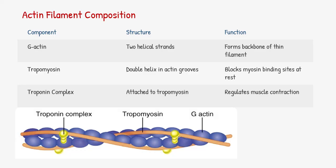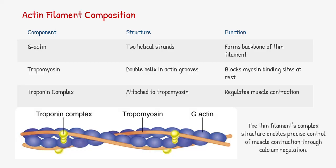Actin isn't alone — it's part of a sophisticated team. The G-actin subunits twist to form the filament's backbone. Lying in the grooves is tropomyosin, which blocks binding sites when muscles are relaxed. Troponin, a regulatory complex, decides when those sites are exposed by reacting to calcium. This trio makes the thin filament a finely tuned machine.